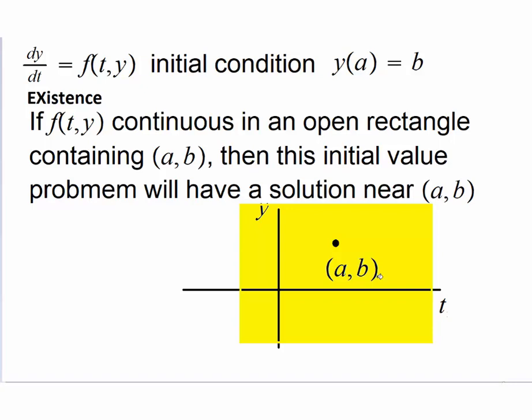So anyways, let me not stretch too much on that. If the function is continuous in an open rectangle containing (a,b), then we are guaranteed the existence of a solution near this point, near (a,b), or rather strictly speaking near t equals a.